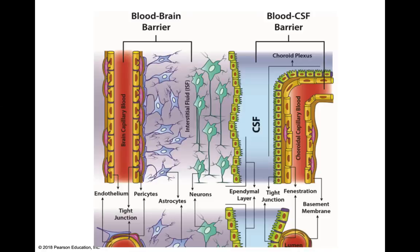The blood-brain barrier is formed by capillary endothelial cells connected by tight junctions. Only lipid-soluble complexes are able to pass — oxygen, ammonia, lipids, steroids, prostaglandins, and small alcohols can pass through these cells. Water and ions have to pass through protein channels, and large water-soluble molecules can only pass by active transport.